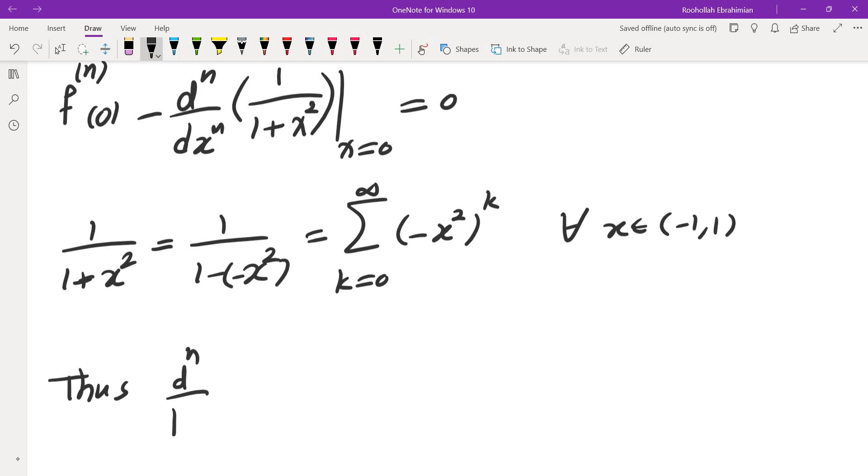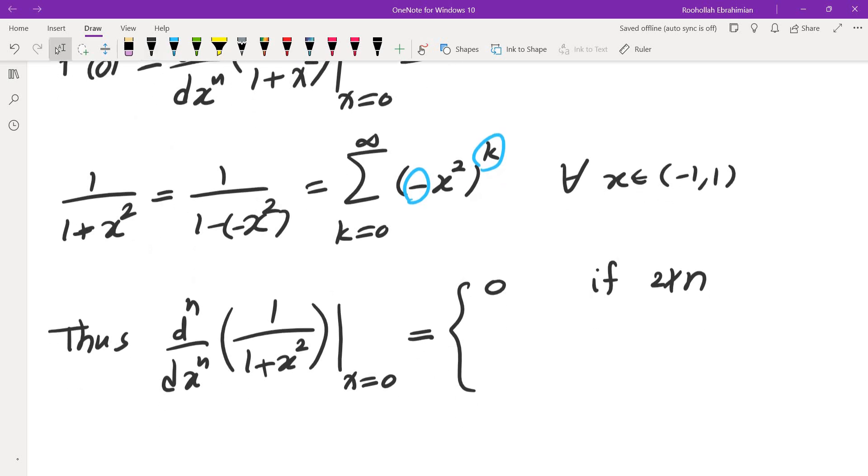So that tells us the nth derivative of this function, 1 over 1 plus x squared at x equals 0 is equal to, it is 0 if n is odd. Because the coefficients, which are negative 1 to the power of k, are the nth derivative divided by n factorial. So the nth derivative would be the coefficient, so it would be negative 1 to the power of n over 2 times n factorial. If 2 divides n.